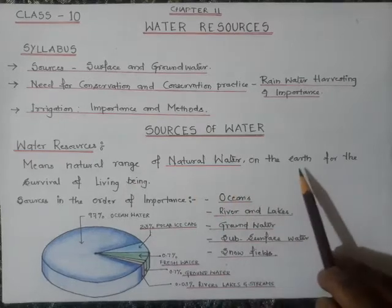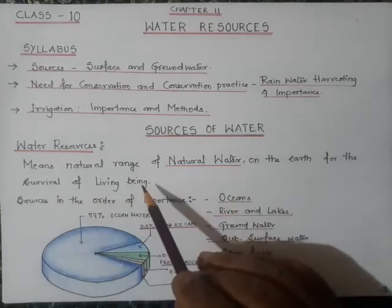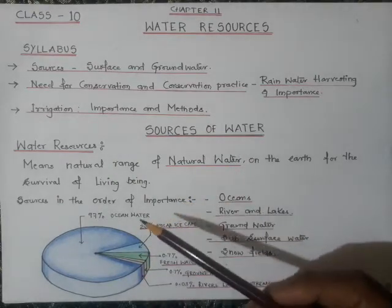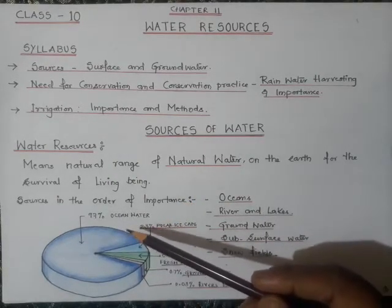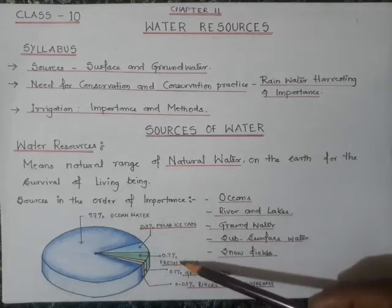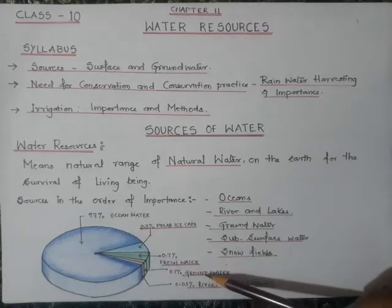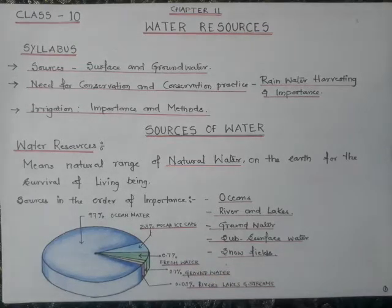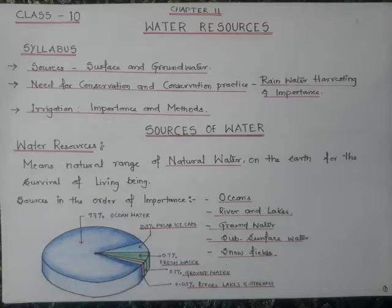Water resource means the natural range of water on the earth for survival of living beings. You should know that 97% of water on earth is ocean water, whereas fresh water accounts for 0.7%, groundwater 0.7%, and rivers, lakes, and streams make up 0.03%. Since saline water is not suitable for agriculture or drinking, it is very important to locate and use available fresh water reserves for productive purposes.